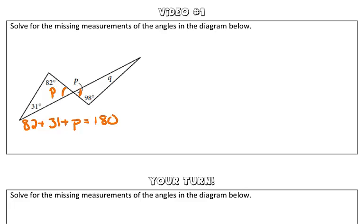To solve for P, we have to combine our like terms. So, 113 plus P is equal to 180 degrees.